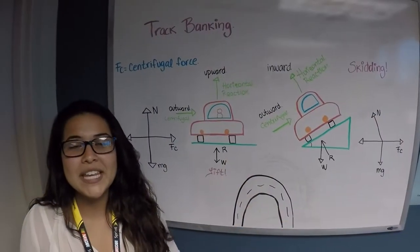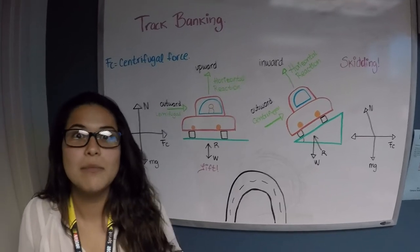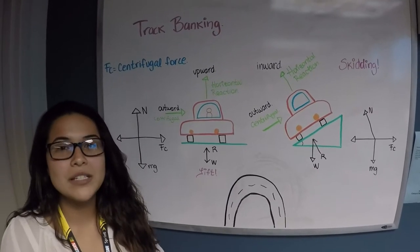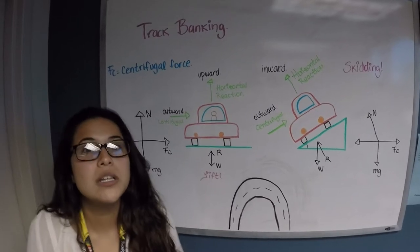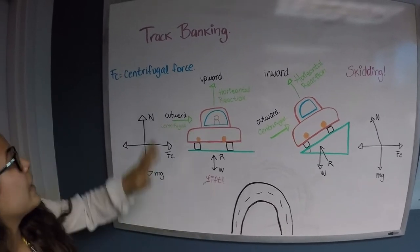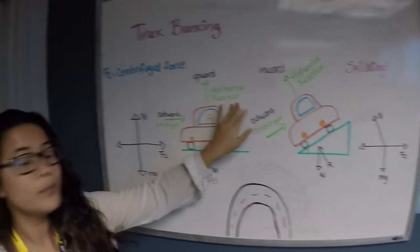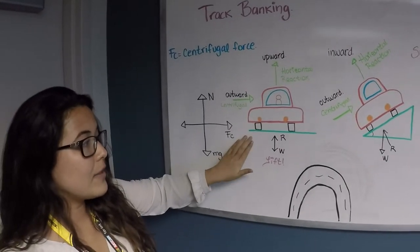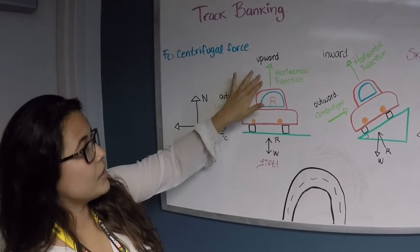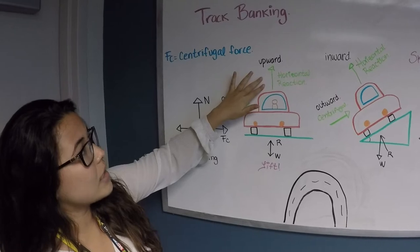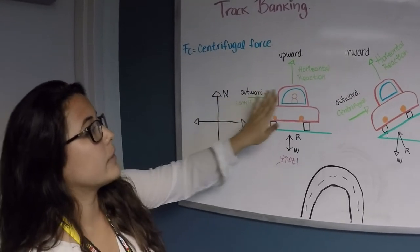Track banking is used for the safety of the drivers as well as the general public. The main cause of accidents is skidding, which is caused by the centrifugal force and the horizontal reaction. When driving on a flat surface, the horizontal reaction acts upward from the car and the centrifugal force acts outward from the car.